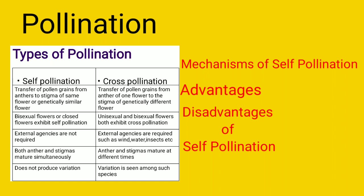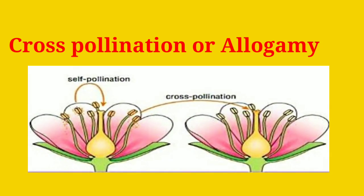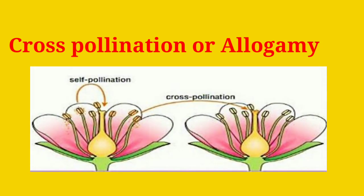In today's class we are going to discuss about cross pollination in case of flowers. Cross pollination is defined as the transfer of the pollen grains from one flower to another flower of a genetically different plant of the same species or of different species. In today's class we are going to discuss about the mechanism of cross pollination along with its various agencies.